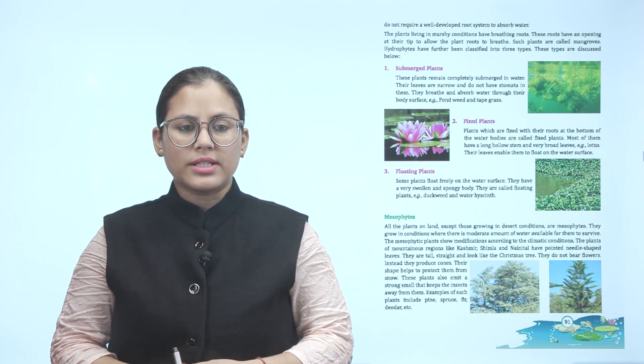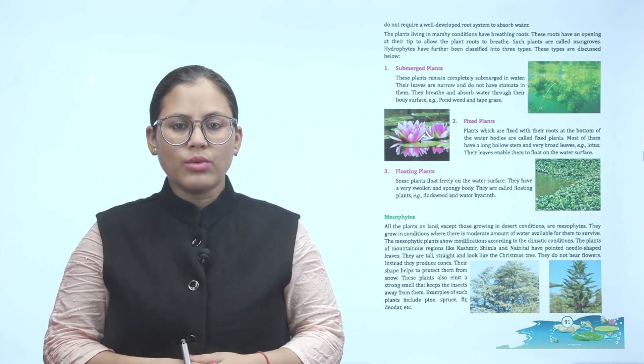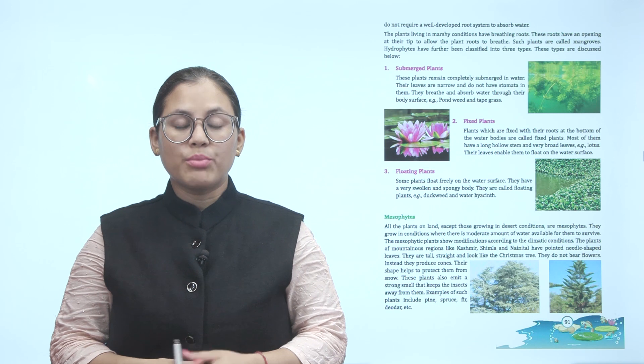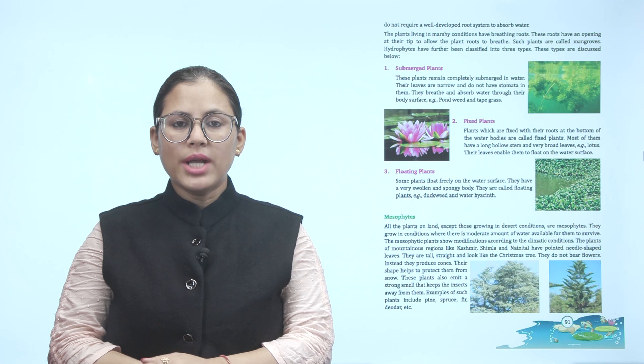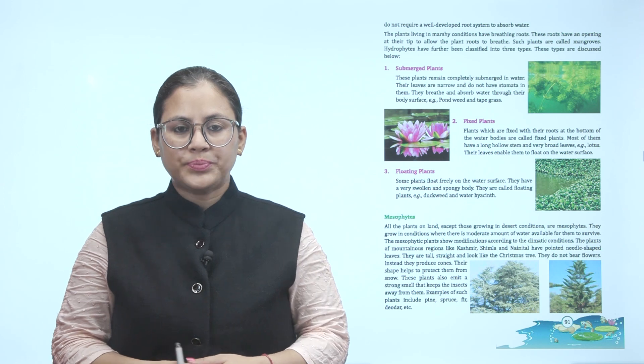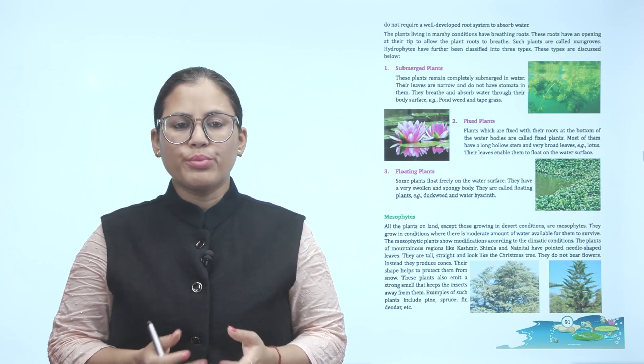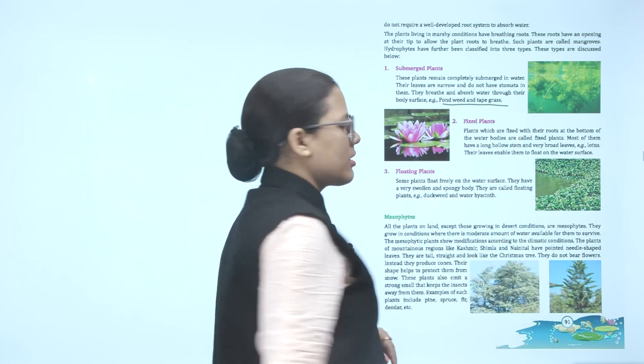Number one is submerged plants. These plants remain completely submerged in water. The leaves are narrow and do not have stomata in them. They breathe and absorb water through their body surface. Example: pond weed and tape grass. These plants are completely submerged in water. They don't have stomata. They breathe and absorb through their body surface.